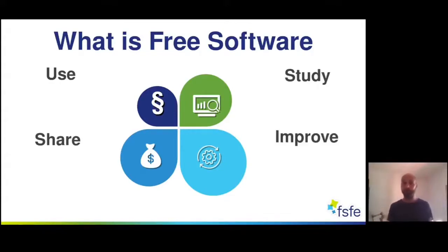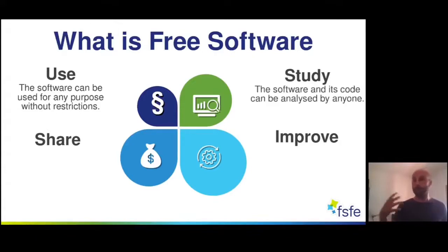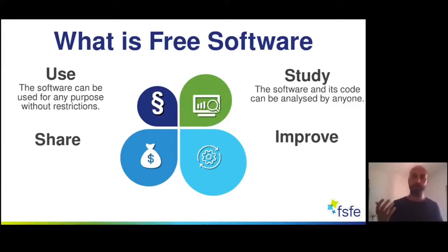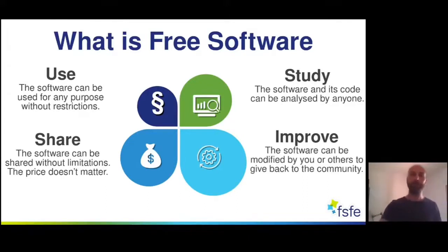When we have these four freedoms, we talk about Free Software, also known as open source. This means you are free to use the software for any purpose without restrictions. The code is transparent, so you can study and analyse it — specifically important when we talk about transparency, which is a key debate around AI. You are also free to share the software without limitations — and the price doesn't matter, so you can earn money with free software — and you are free to improve it.